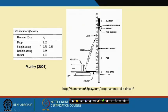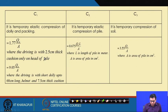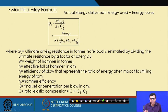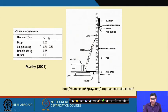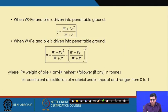The hammer efficiency η_H for different hammer types: drop hammer is 1.0, single-acting steam hammer is 0.75 to 0.85, double-acting steam hammer is 0.85, and diesel hammer is 1.0. All expressions give C1, C2, C3. S is the measured penetration per blow, W is the weight of the hammer, H is the free fall of the hammer, η_H is the hammer efficiency from the table, and η is the blow efficiency from the two expressions depending on the condition during pile driving.